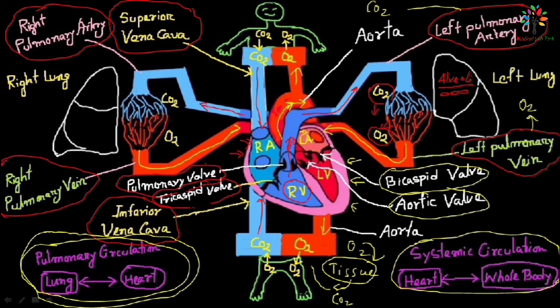One more point — both the right atrium and left atrium contract at the same time, and the right ventricle and left ventricle also contract at the same time. You may have a question: how can the lung get oxygenated blood? The pulmonary artery carries deoxygenated blood into the lung for purification, so how does the lung tissue itself receive oxygenated blood?